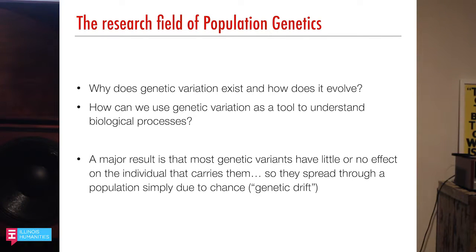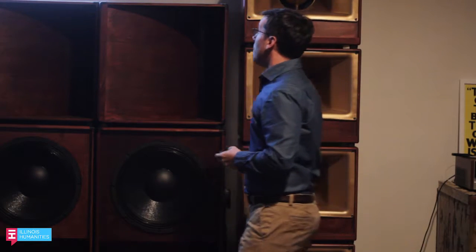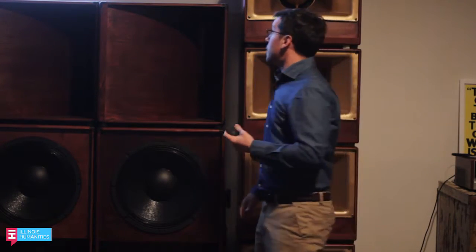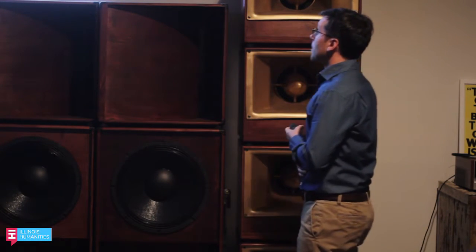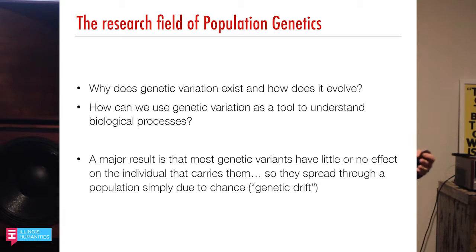The research field of population genetics classically asks: why does genetic variation exist and how does it evolve? Why isn't every one of these columns just all the same? You might naively think there's a right way to be genetically. Drosophila fruit flies on average have a difference every one in every hundred base pairs, while humans have a difference only one in every thousand. A major result is that most of these genetic variants have little or no effect on the individuals that carry them, so they spread through a population simply by chance. We call this chance change in the frequencies of different alleles genetic drift.